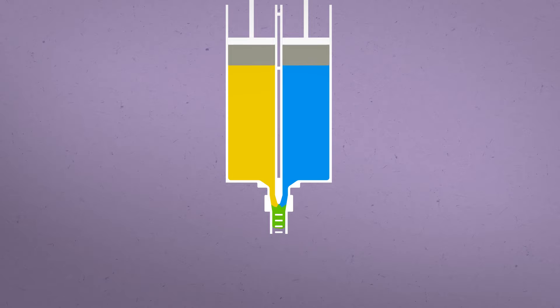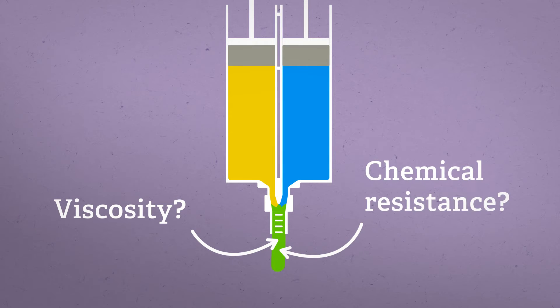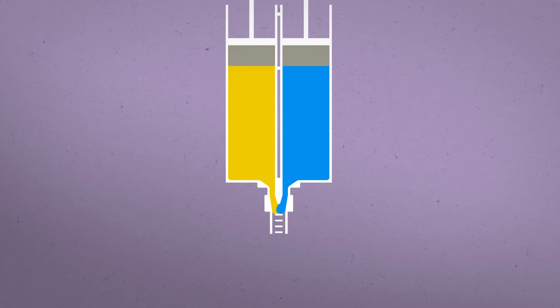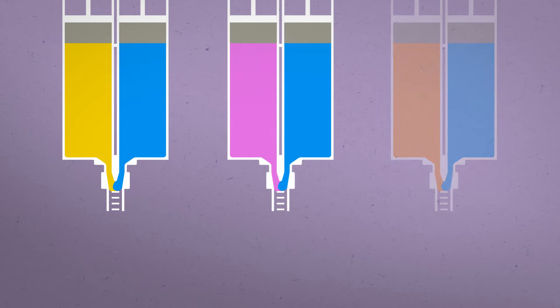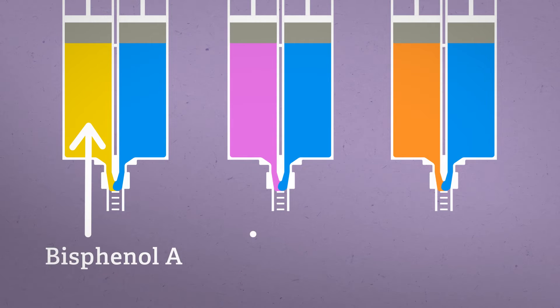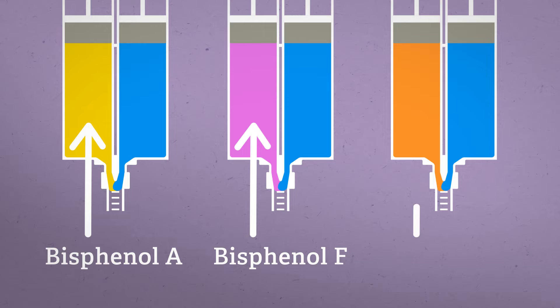The type of epoxy resin can be different depending on what's expected from the glue. For example, if more viscosity and greater chemical resistance are needed, a different type of resin will be used. The three main types of epoxy resins are Bisphenol A, Bisphenol F, and Novolac.